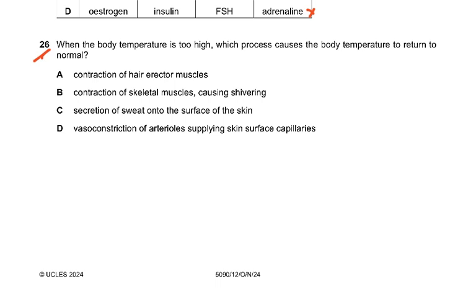Question 26. When the body temperature is too high, which process causes the body temperature to return to normal? There should be secretion of sweat — the rest are all wrong. Contraction of hair erector muscles happens at cold temperature. Contraction of skeletal muscle causing shivering occurs if you fall into ice-cold water. And vasoconstriction of arterioles reduces blood supply to the skin, which only occurs in very cold conditions.